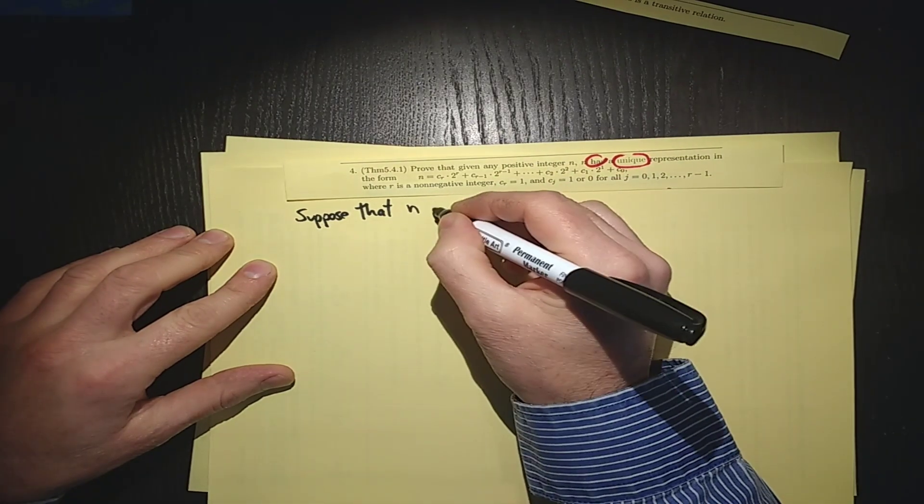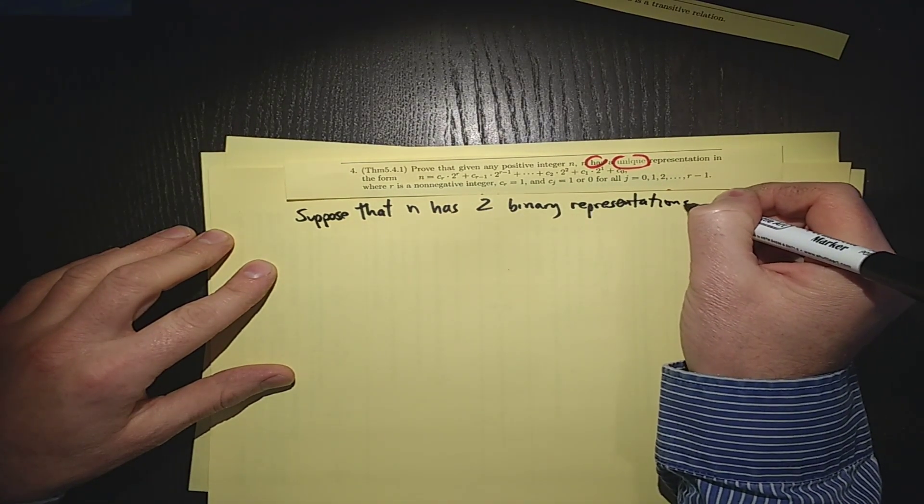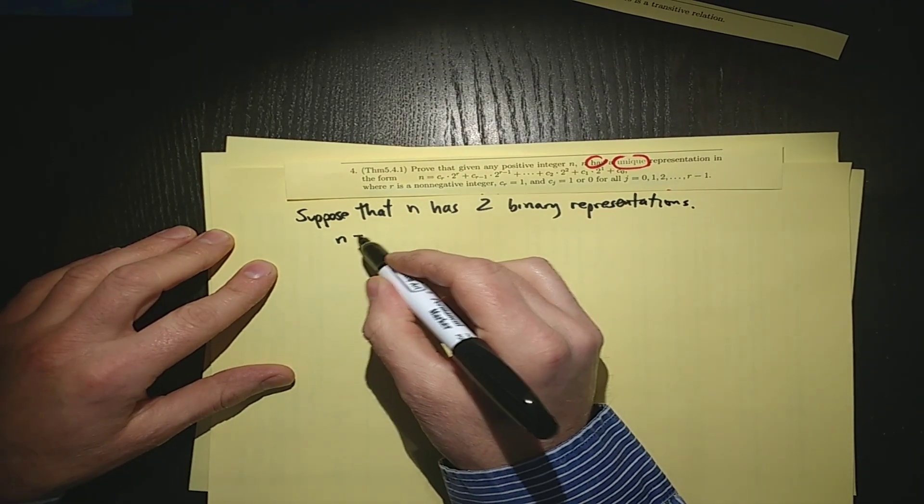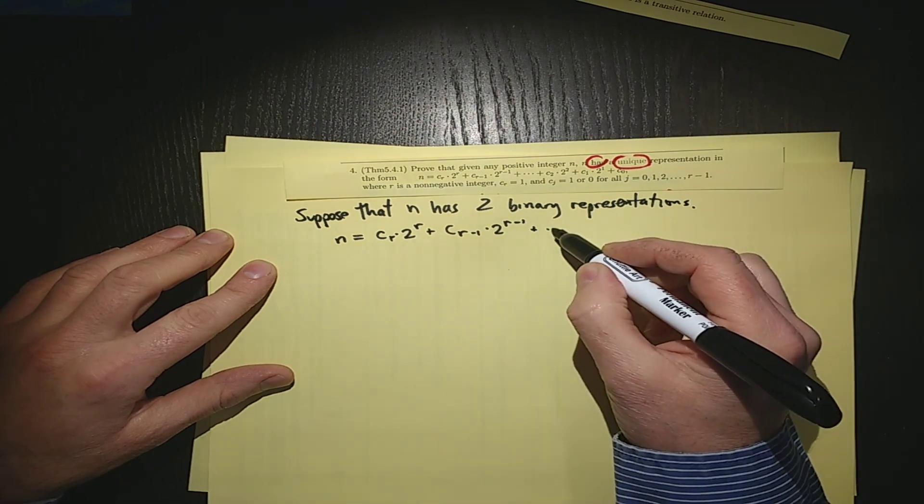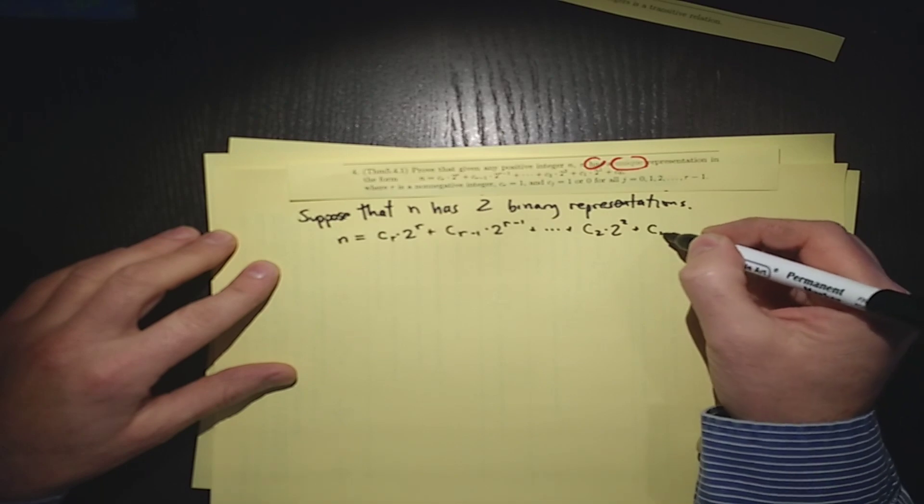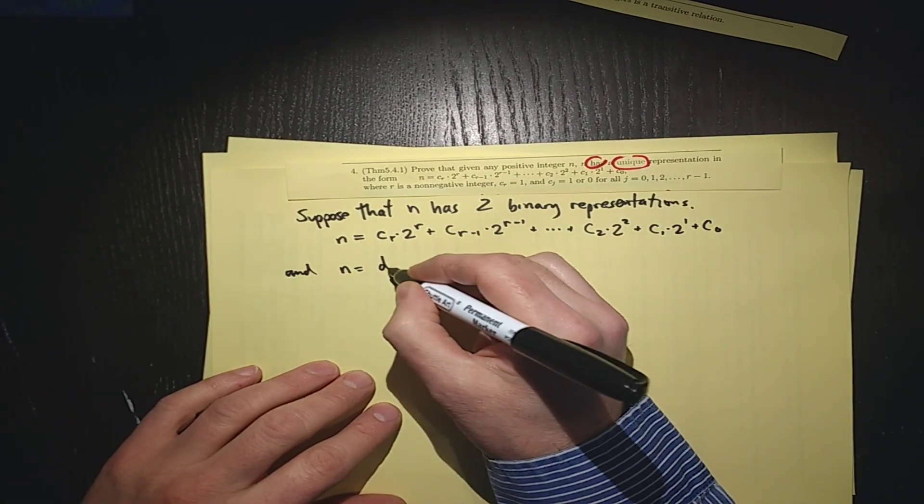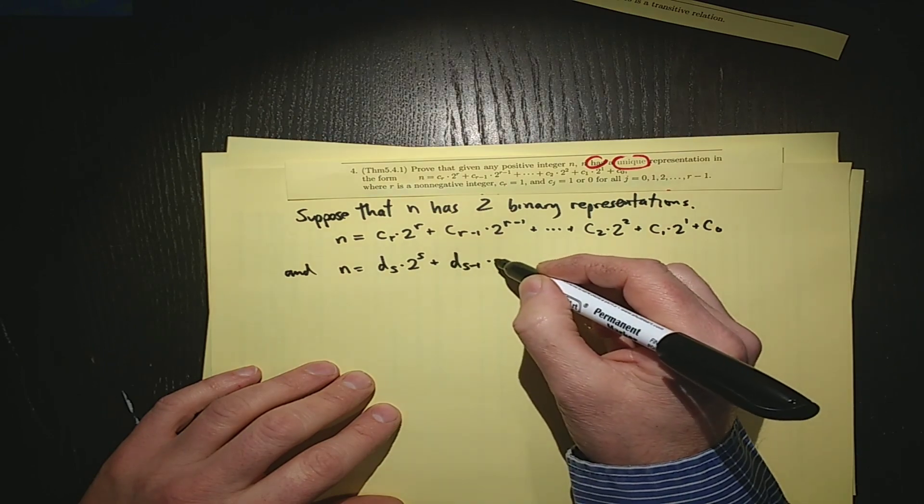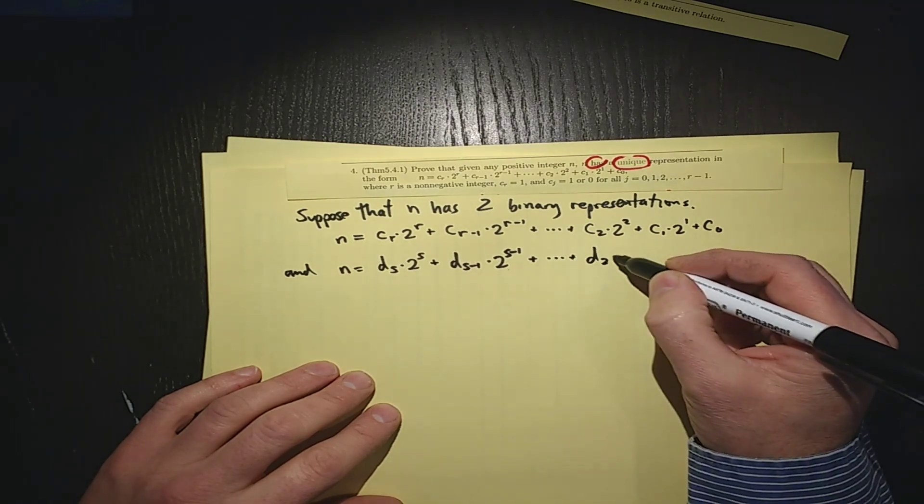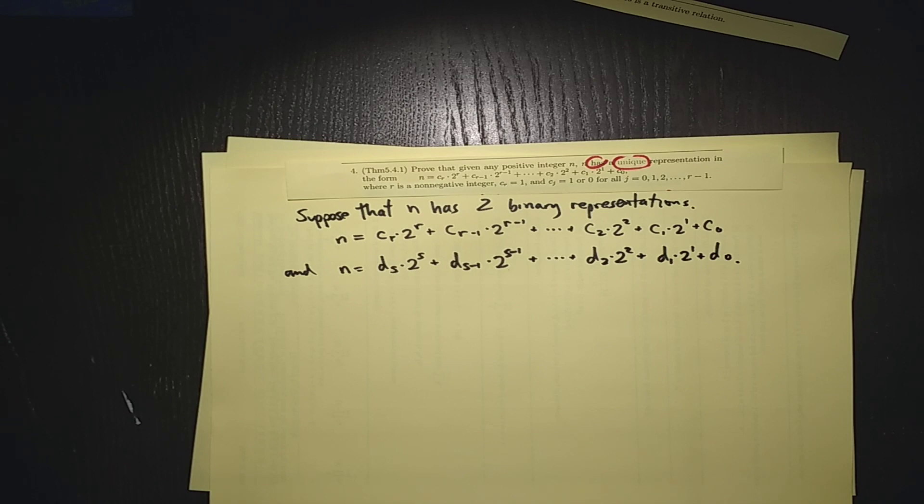Suppose that n has two binary representations. That means that n equals cr times 2 to the r plus cr minus 1 times 2 to the r minus 1 plus all the way down to c2 times 2 squared plus c1 times 2 to the 1 plus c0, and n has another binary representation. Let's call it ds times 2 to the s, r and s might be different, plus ds minus 1 times 2 to the s minus 1 plus all the way down to d2 times 2 squared plus d1 times 2 to the 1 plus d0. So here's two binary representations, and we have to come up with a contradiction.